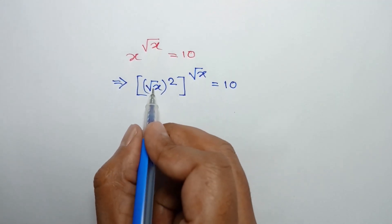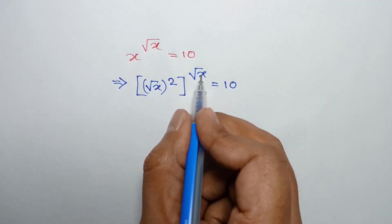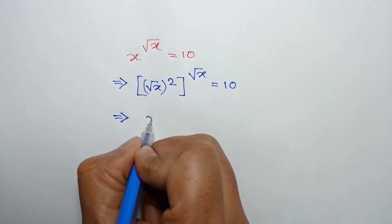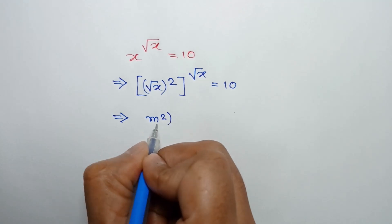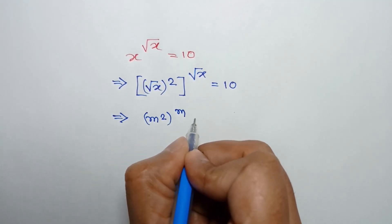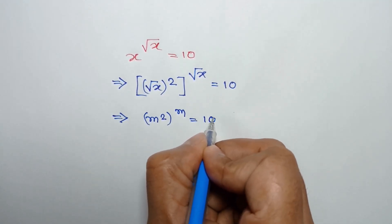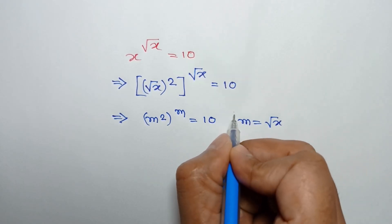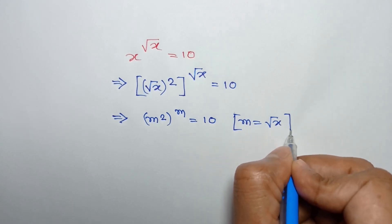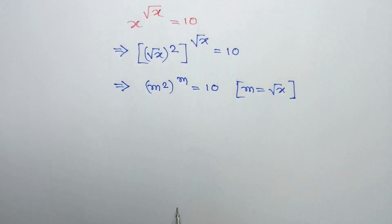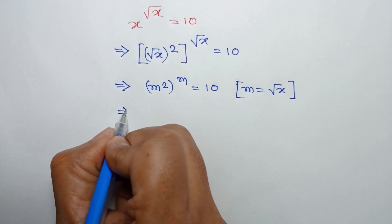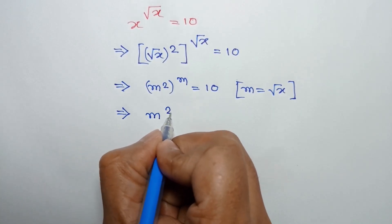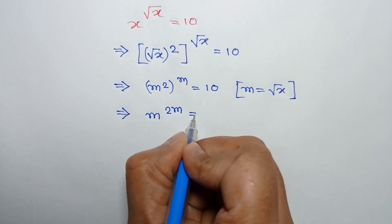Let's consider square root of x as m. We can write m squared whole to the power m is equal to 10, where m is equal to square root of x. Or it can be written as m to the power twice m is equal to 10.